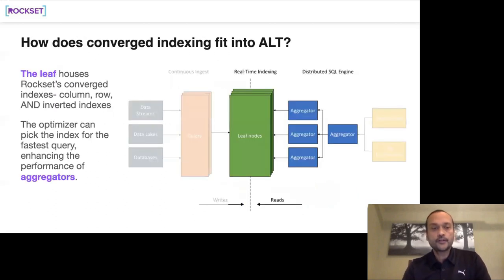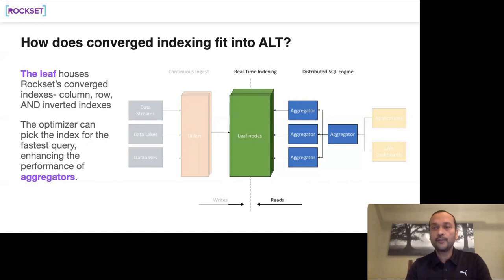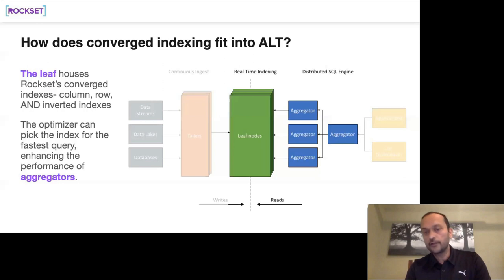How does converged indexing leverage the ALT architecture? Scaling up tailors is relatively easy because they're stateless — scaling stateless compute is much easier than scaling stateful systems. The tailors are the ones extracting all fields from semi-structured data and storing the indexes on the leaves. The aggregators then know which indexes to use to make queries fast.